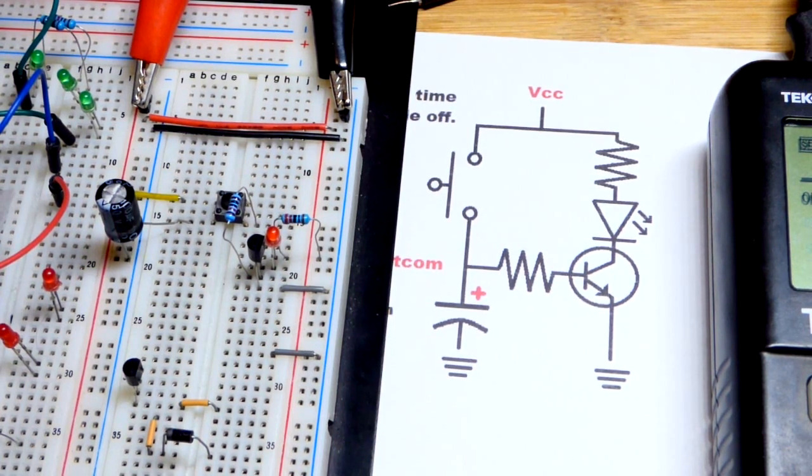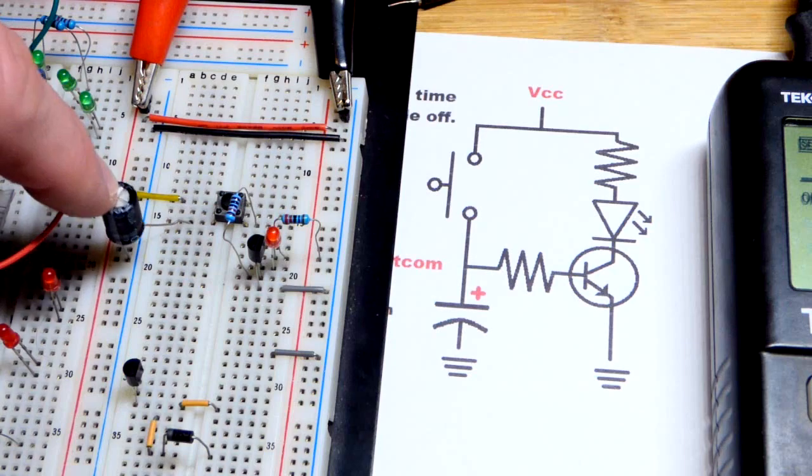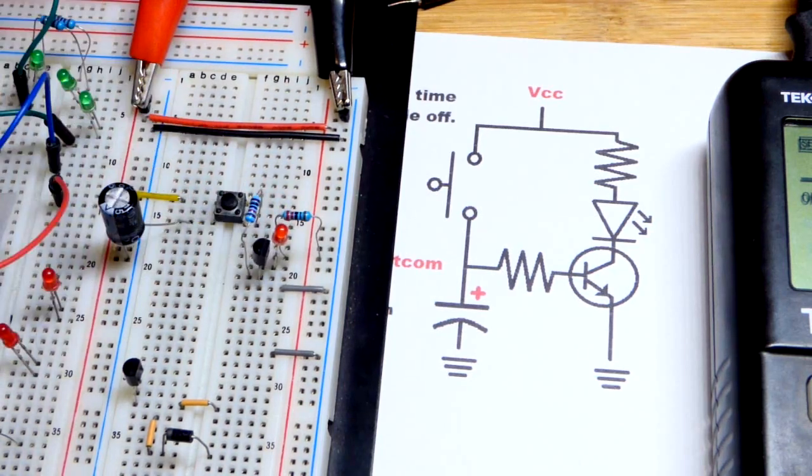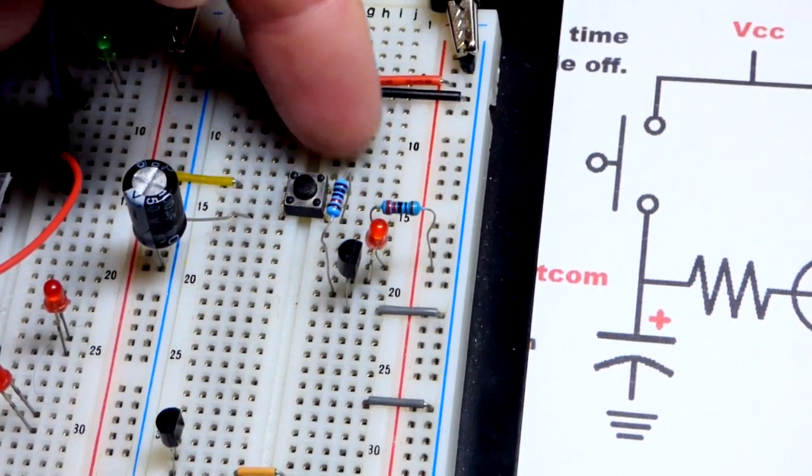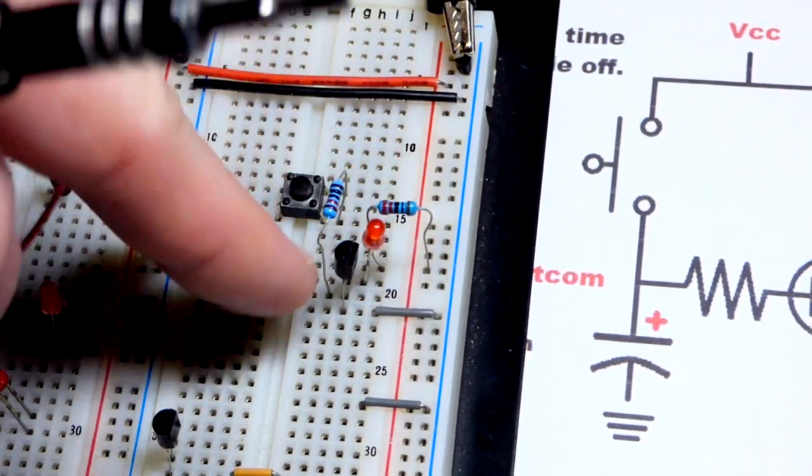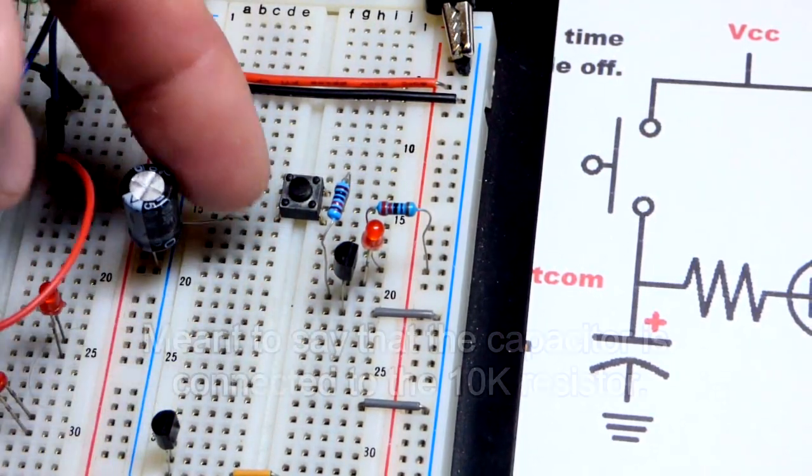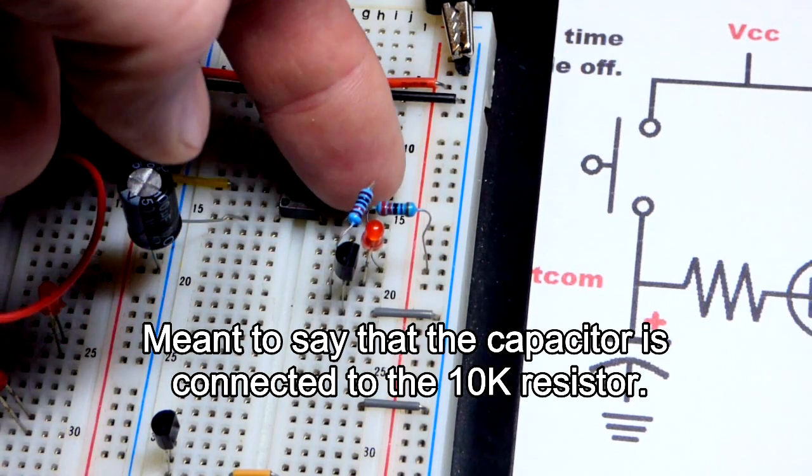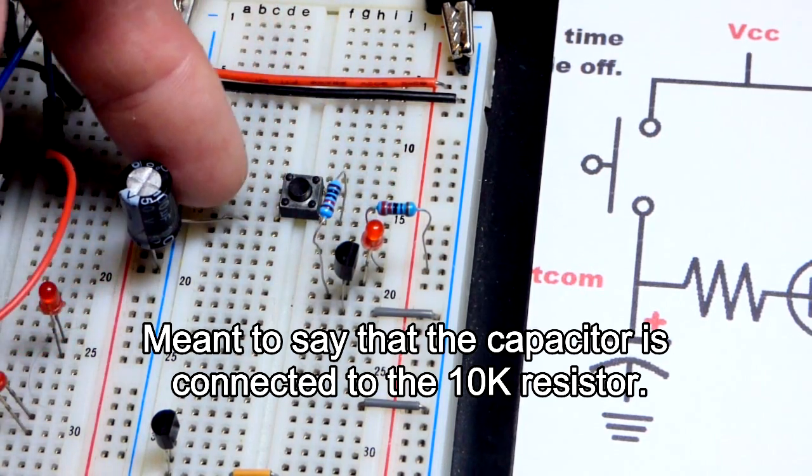So that's it. All we had to do was add a capacitor. It made the circuit more interesting. And in case you didn't know, the top of the switch is always connected. The bottom of the switch is always connected. So the resistor right now is connected to the 10 kiloohm resistor. There's a direct connection.